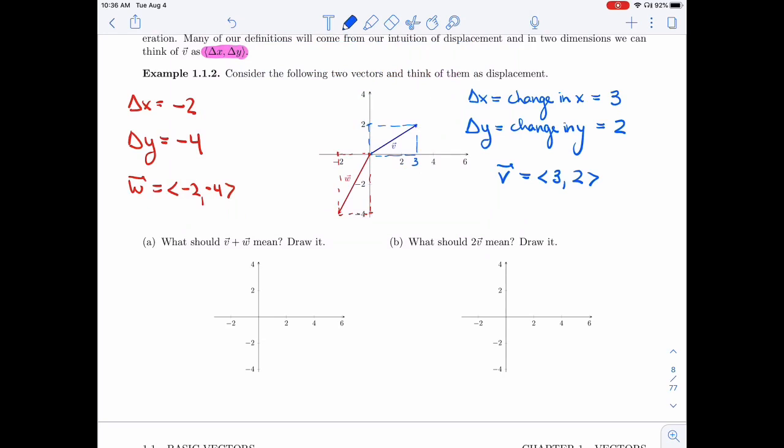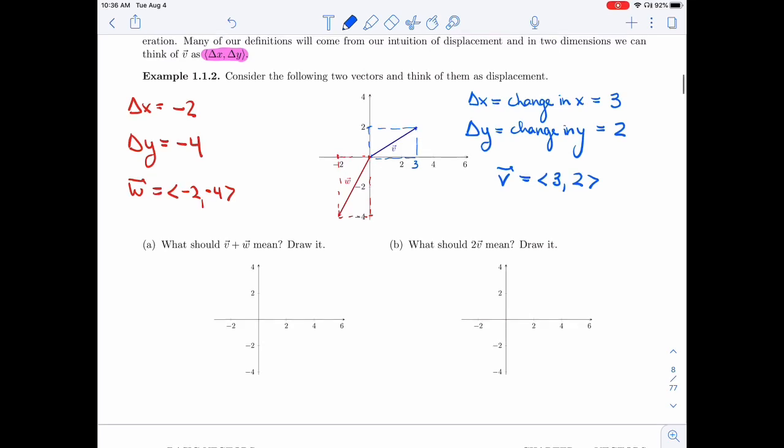Alright, in part A, we're asked to figure out what V plus W should mean. And we're asked to draw it. So I'm going to think of it as displacement and I'm going to be a little person standing at the origin here. V plus W in my mind tells me to do the displacement of V and then to do the displacement of W. So I'm going to start with the displacement of V. So now I'm standing at this little tip here of V. I want to then do the displacement of W. So I'm going to go left 2 and down 4. And so here's W.